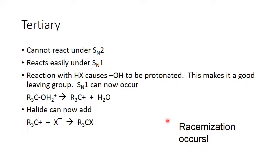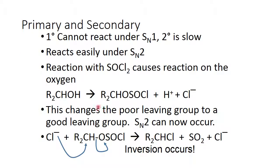One result to note is that racemization occurs with the hydrohalic acid route, but we've got to use that for a tertiary alcohol. For primary and secondary alcohols, we use thionyl chloride and phosphorus tribromide because the primary cannot react under SN1 conditions, and the secondary is slow. Also, secondary carbocations are prone to rearrangement, so using SN2 conditions gives us more likely the product we want. The thionyl chloride derivatizes the alcohol, then the chloride dives in and pushes the leaving group out. We get sulfur dioxide which bubbles away and a stable chloride ion. Notice — because it's SN2, inversion occurs.